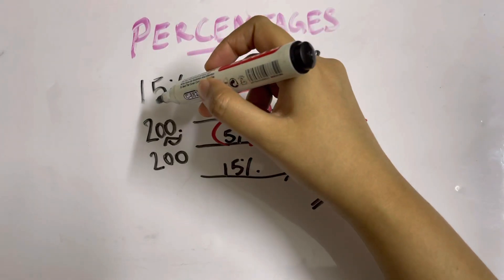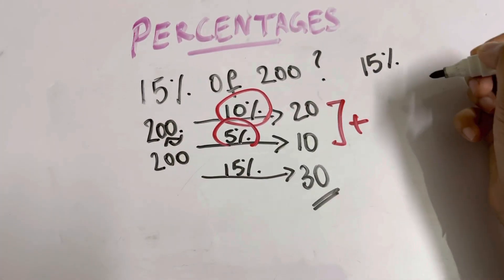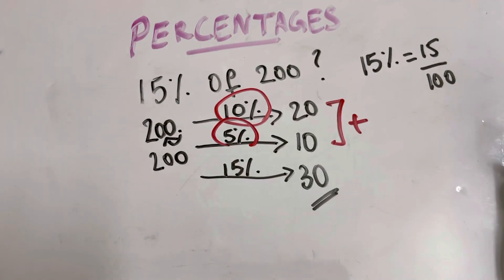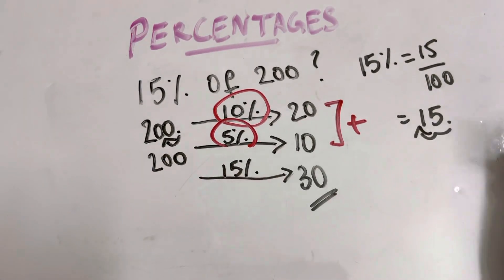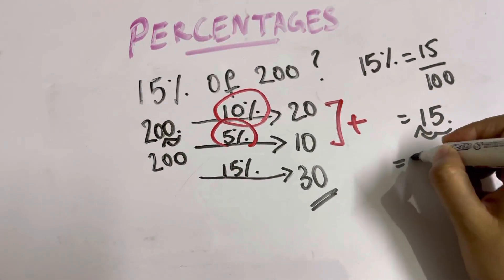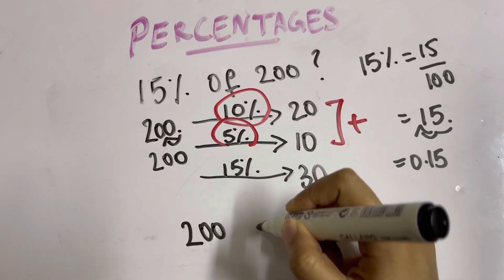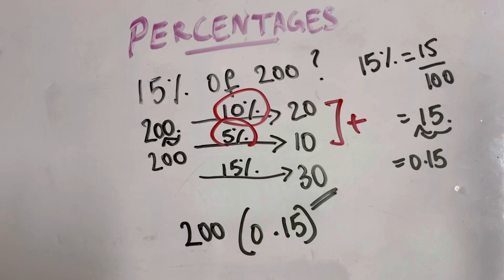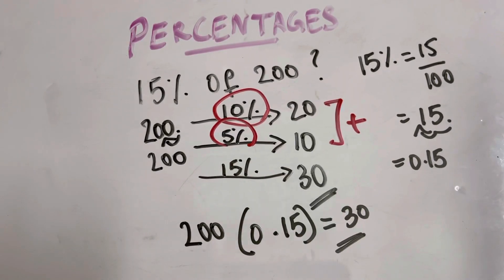Let's verify: first convert the percentage to decimal. 15% divided by 100 — take the decimal and move two slots towards the left — gives 0.15. Now check in your calculators: 200 multiplied by 0.15 is equal to 30. Let's move on to the next question.